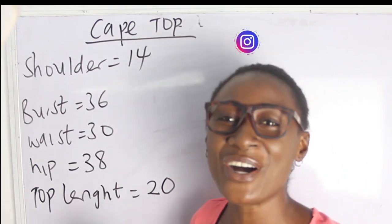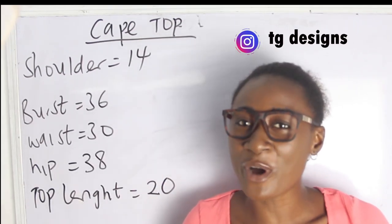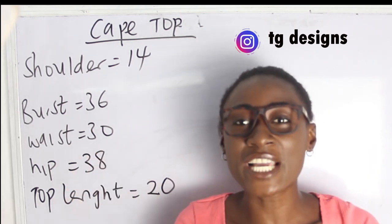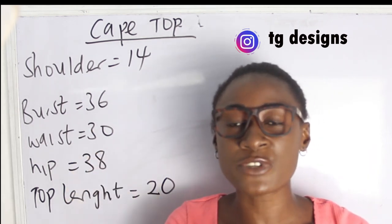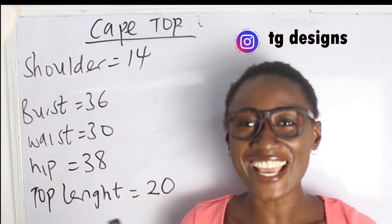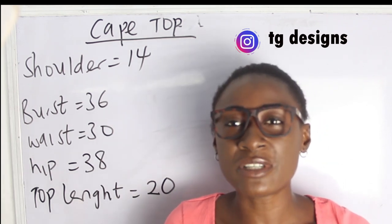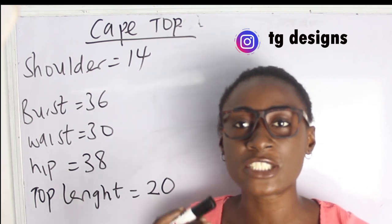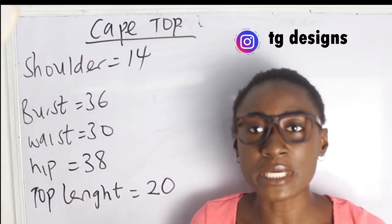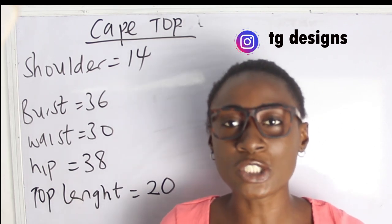Hi guys, welcome to my channel. If this is your first time here, thanks a lot — don't forget to give this video a thumbs up, like, share, and subscribe. So what are the basic measurements required in order for you to achieve your cape circle top? They are: shoulder measurements, bust, waist, hip, and your top length.